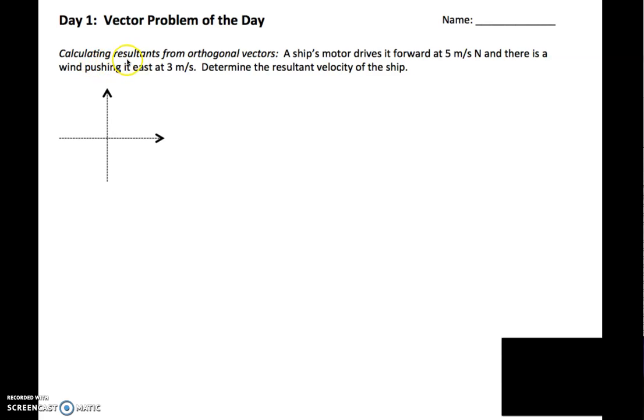This one is called calculating resultants from orthogonal vectors. So what that means is that we are going to do a calculation of the resultant or answer vector from orthogonal vectors. And orthogonal is just a really fancy word for perpendicular, which is just a really fancy word for at a right angle, or at a 90 degree angle to each other. So we have a ship's motor drives forward at five meters per second north, and then there's a wind pushing it east at three meters per second.